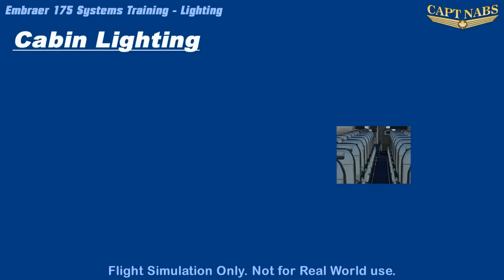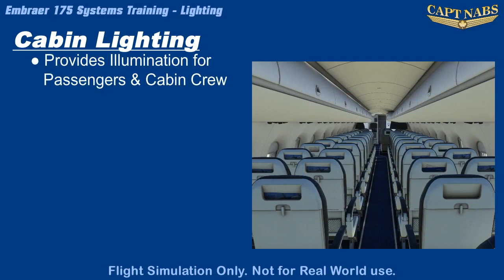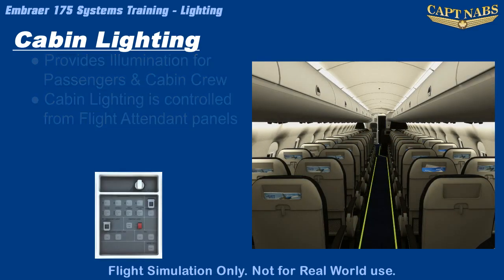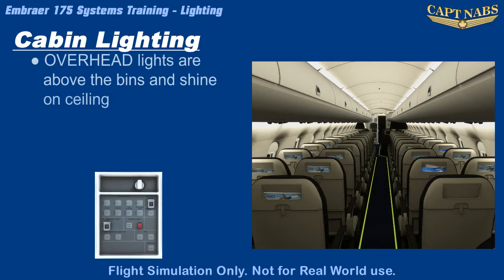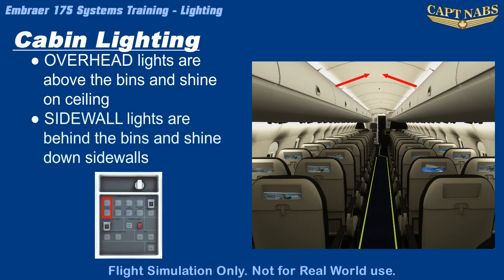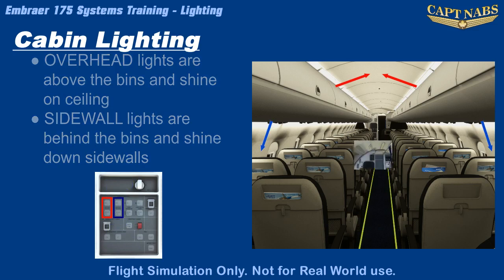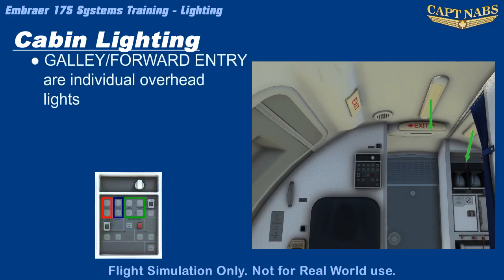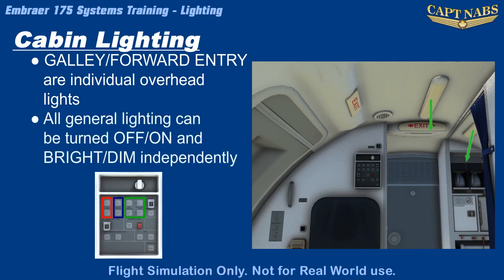Lighting is provided in the passenger cabin for safety and convenience of cabin crew and passengers. There are several different lighting systems located throughout the cabin, all controllable from the flight attendant panels. There is an overhead light system — lights hidden above the overhead storage bins along the length of the cabin that provide a diffuse light reflecting off the ceiling panels. There is also a sidewall light system, mounted behind the overhead bins and shining down the cabin sidewalls. There are also overhead lights in the galley and entry areas on separate circuits. All of these lighting sources can be turned off or on in a bright or dim setting independently.